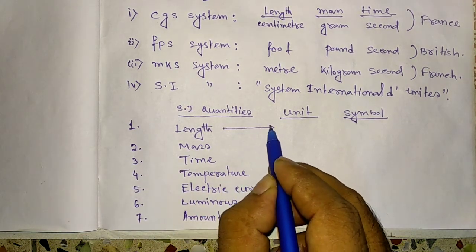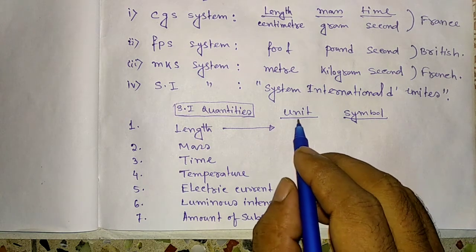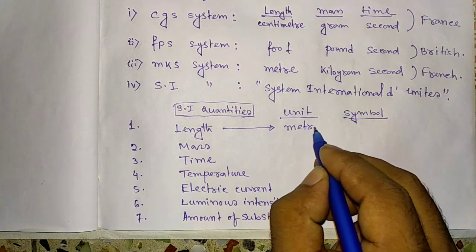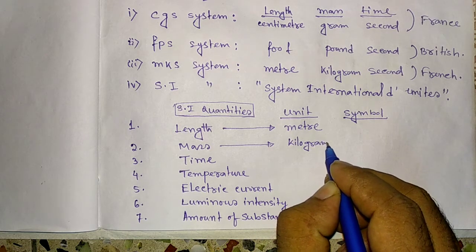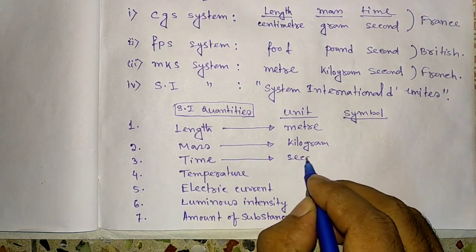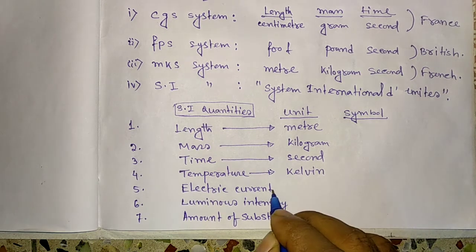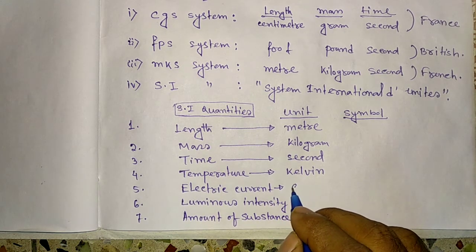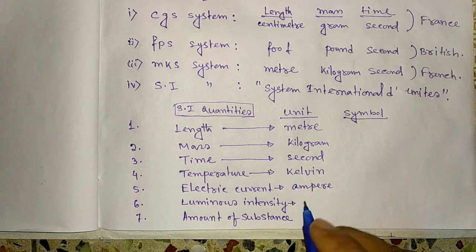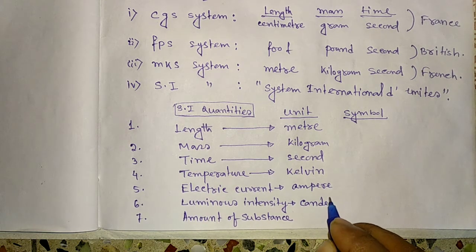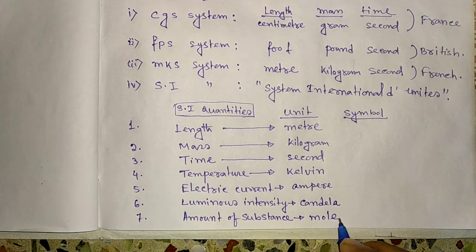Now, unit of length is, in SI system, meter. Unit of mass is kilogram. Unit of time is second. Unit of temperature is Kelvin. Unit of current is ampere. Unit of luminous intensity is candela. Unit of amount of substance is mole.